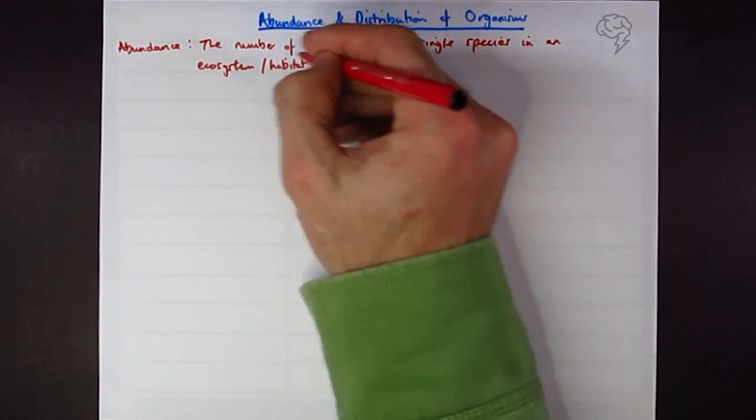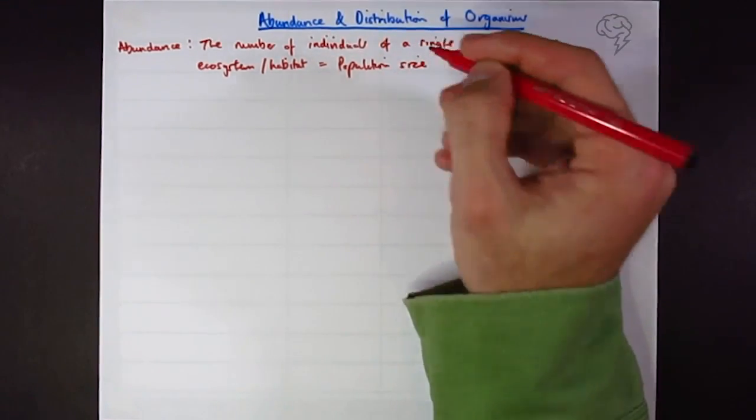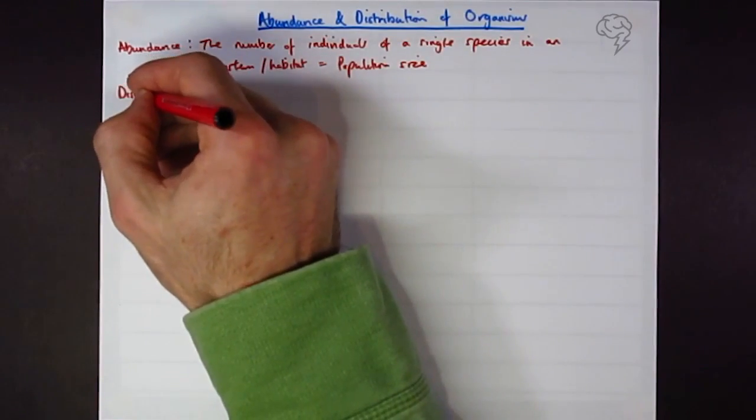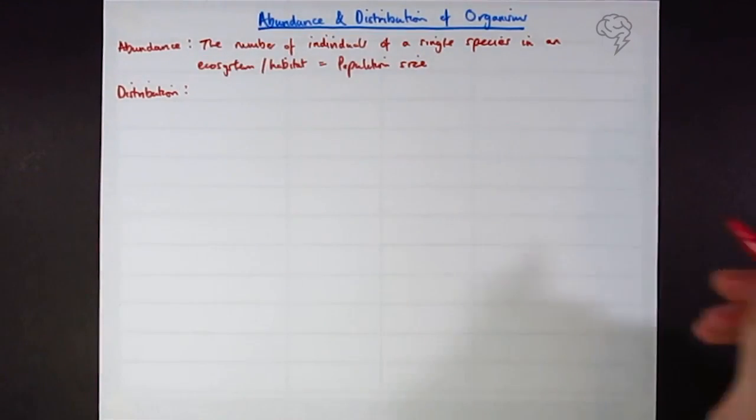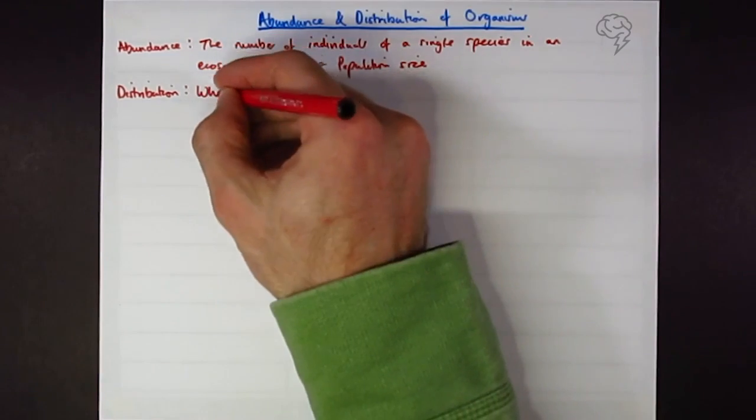So it's the same as population size. And then distribution - you're unlikely to get asked for the definition of this, but it's where the species are found in an ecosystem or habitat.